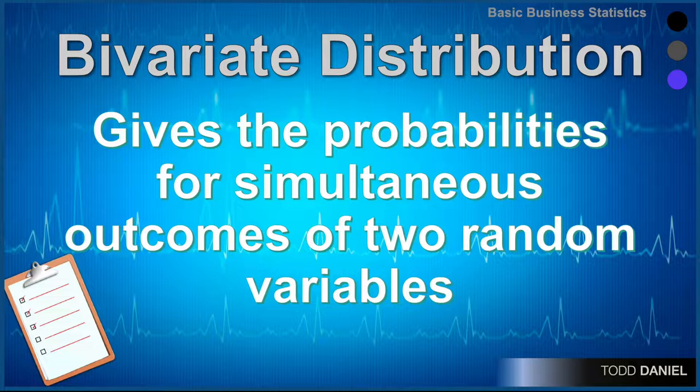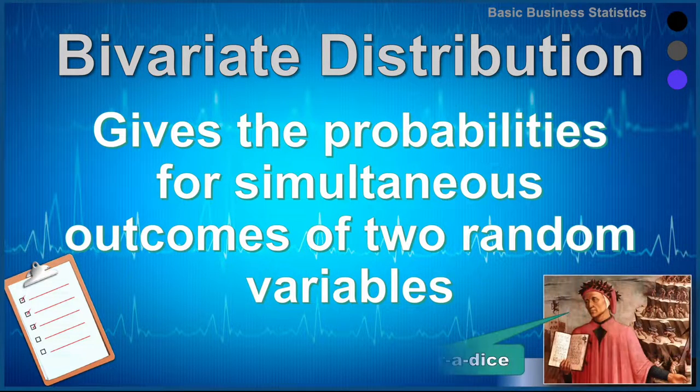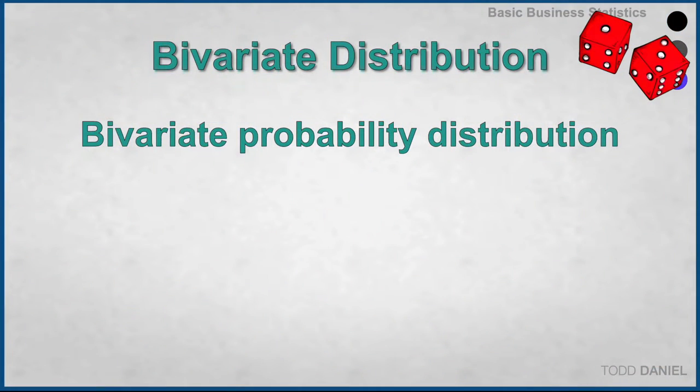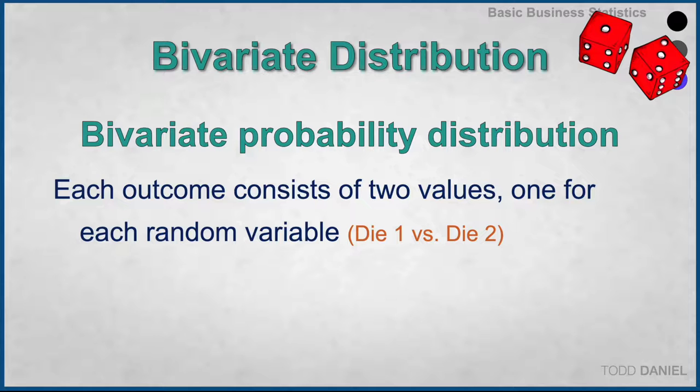The bivariate distribution gives the probabilities for simultaneous outcomes of two random variables. In a bivariate probability distribution, each outcome consists of two values, one for each random variable. For example, the outcome from die number one compared with the outcome from die number two — which could be made even more interesting if we compare the outcome from an eight-sided die and the outcome from a twenty-sided die.